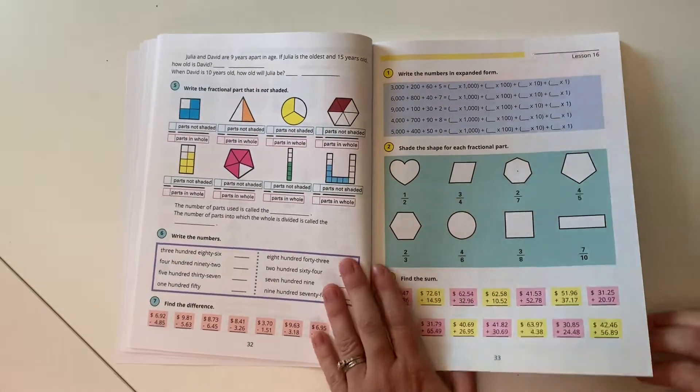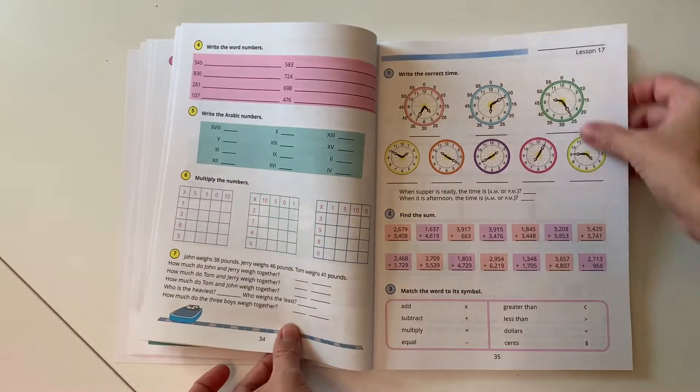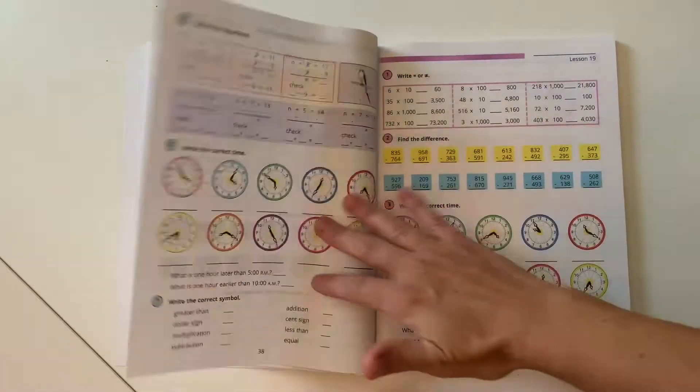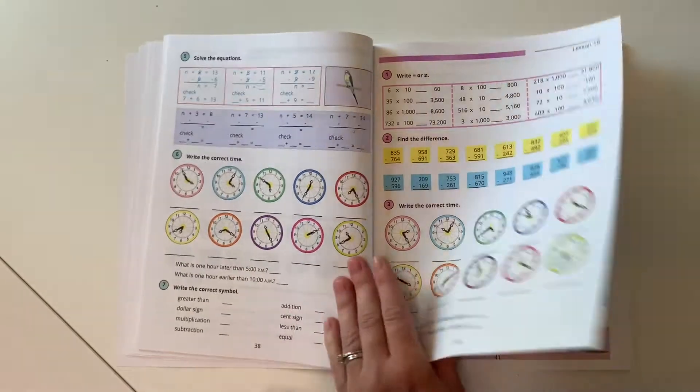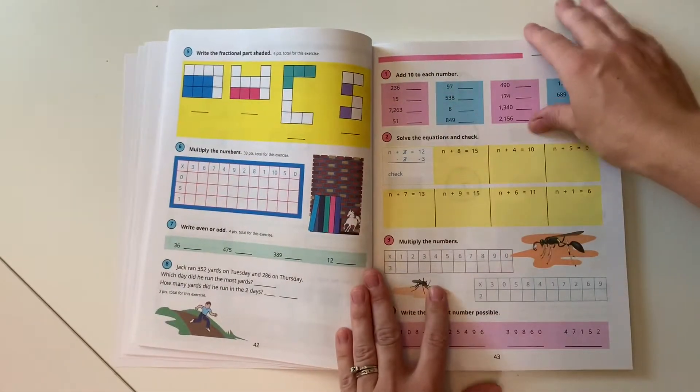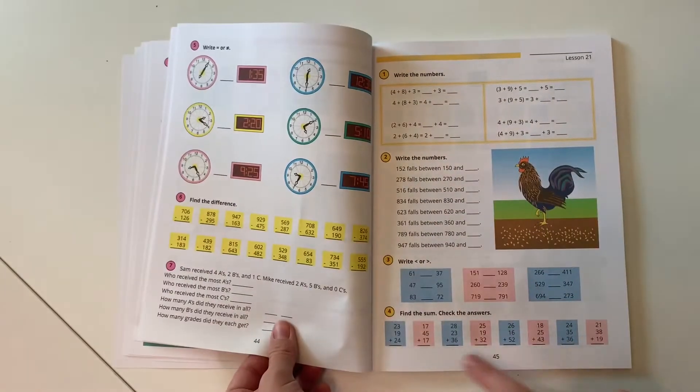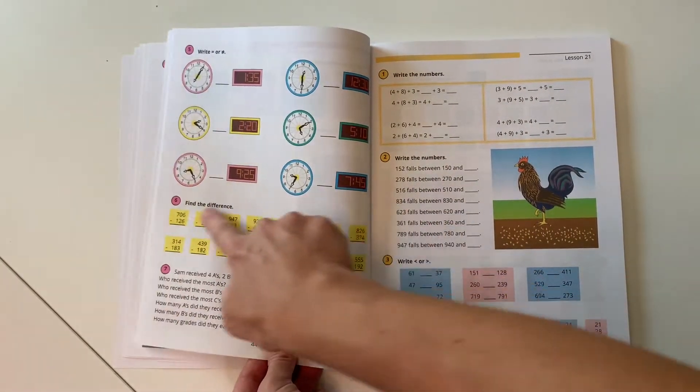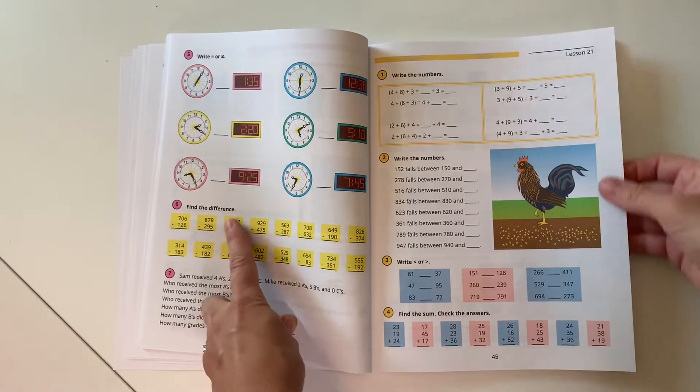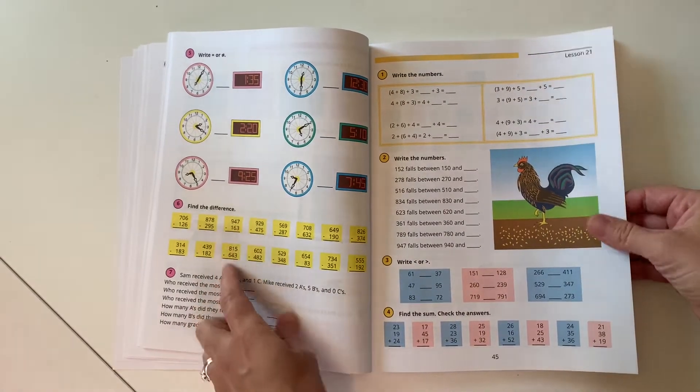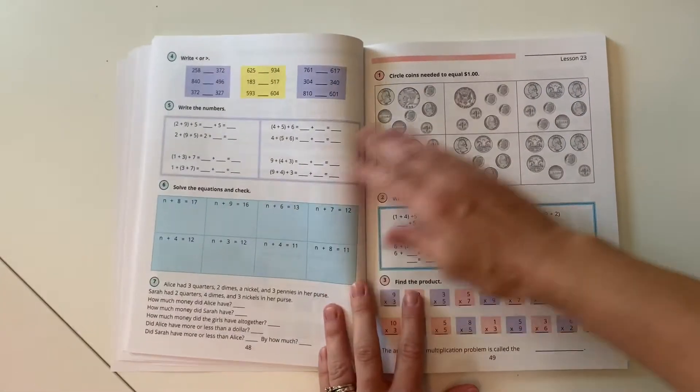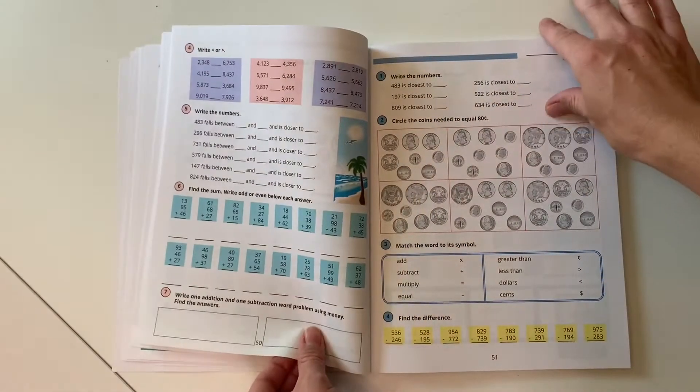Normally, when I look through these workbook pages with my daughter, if she has a skill down, if she knows it pretty well, we'll only do two or three problems to review it. I'm not going to have her do every single one. This to me kind of seems like overkill. So we will usually just do three or four and that shows me whether or not she still remembers how to do it.